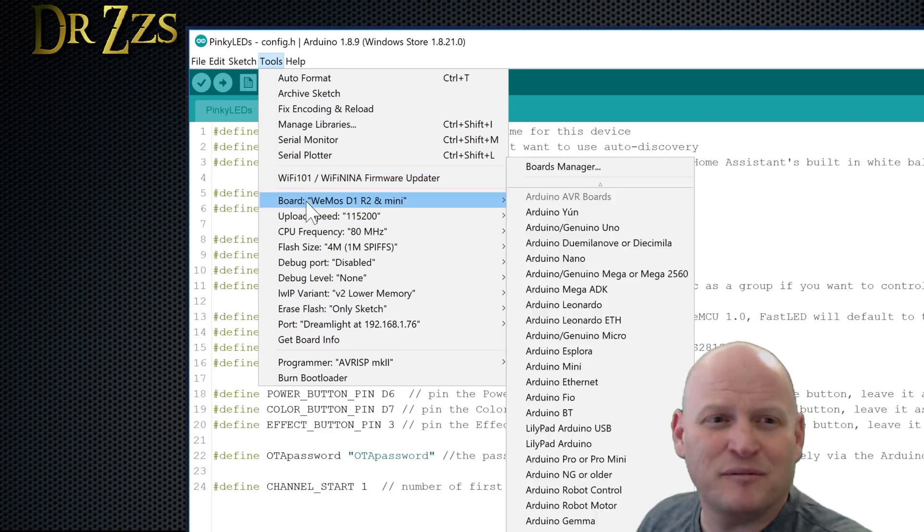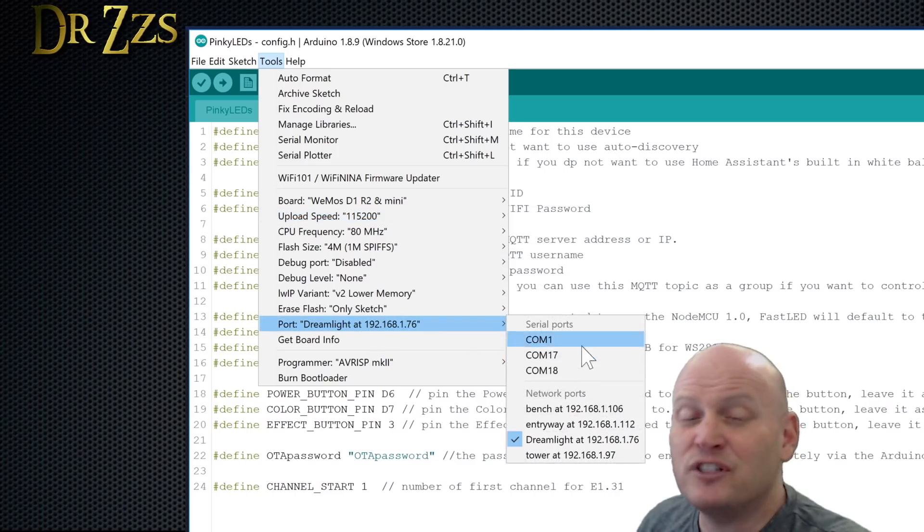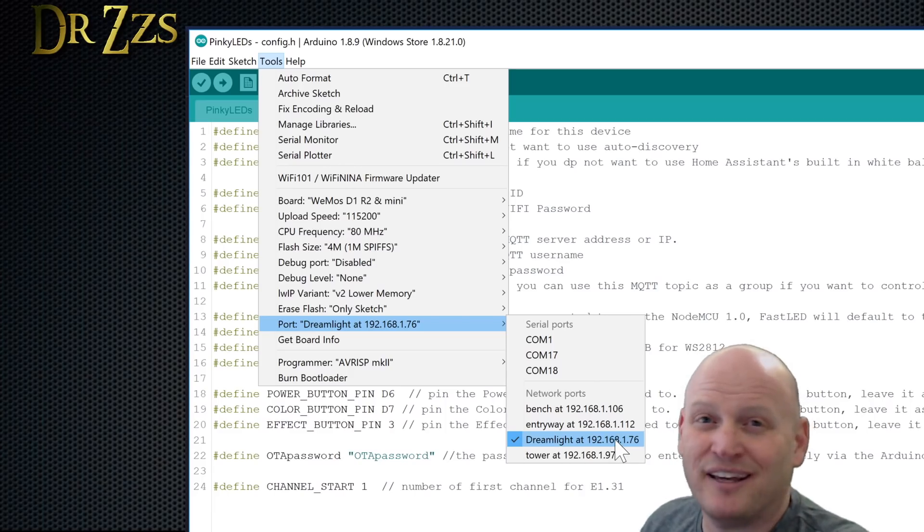When you go to compile, make sure you've got the right board chosen. Use a good upload speed. 1150-200 works well. The first time you upload it, you'll have to do it through the USB port on your computer. But after that first time, you'll be able to connect to it and make updates and changes over the air. So even if you have it installed somewhere and you want to change some effect, you can do that here without unplugging it and bringing it back to your computer. That's fantastic.